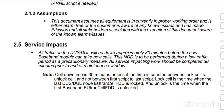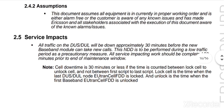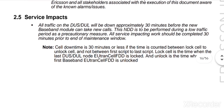Service impact: all traffic on the DOL will be down approximately 30 minutes before the new baseband module can accept new calls. This NDD is to be performed during a low-traffic period as a precautionary measure. All service-impacting work should be complete 30 minutes prior to the end of the maintenance window. Cell downtime is 30 minutes or less, counted from locked cell to unlocked cell, and node bin from first script to last script. Locked cell is when the last TOS DOL node E-UTRAN cell FDD is locked; unlocked is when the first baseband E-UTRAN cell FDD is unlocked. All questions will be posted in the calendar.